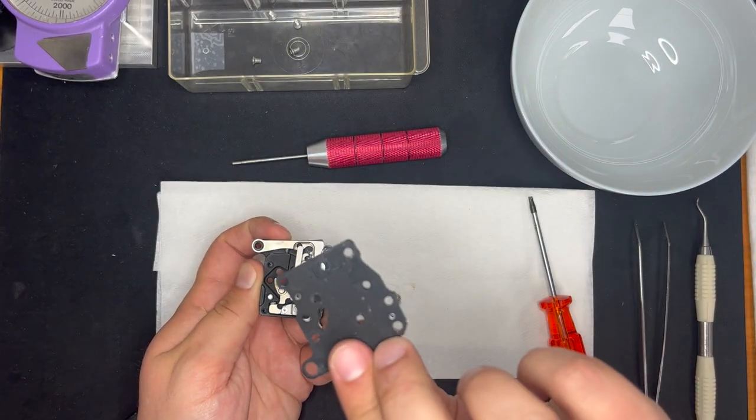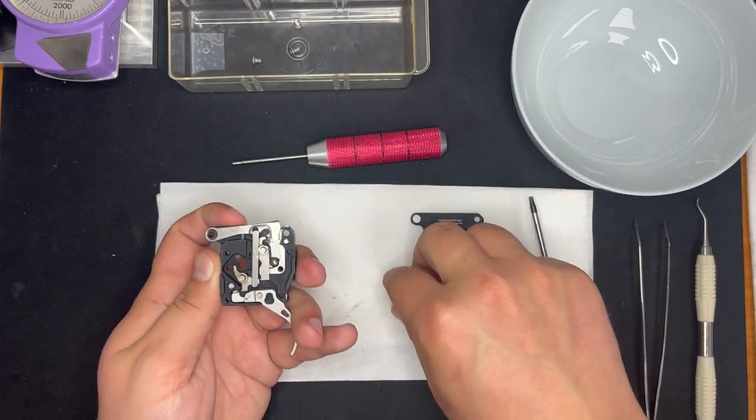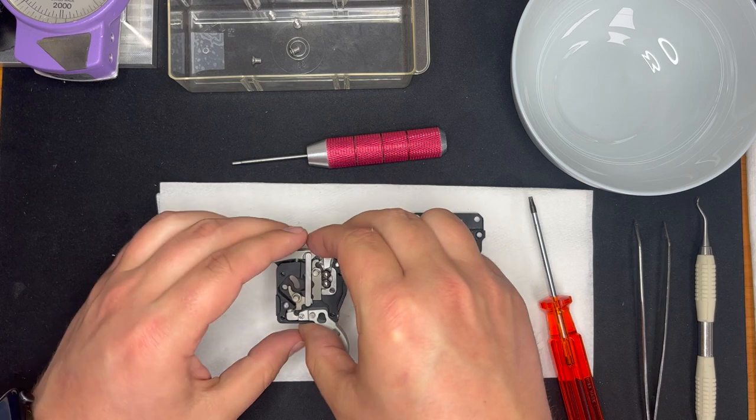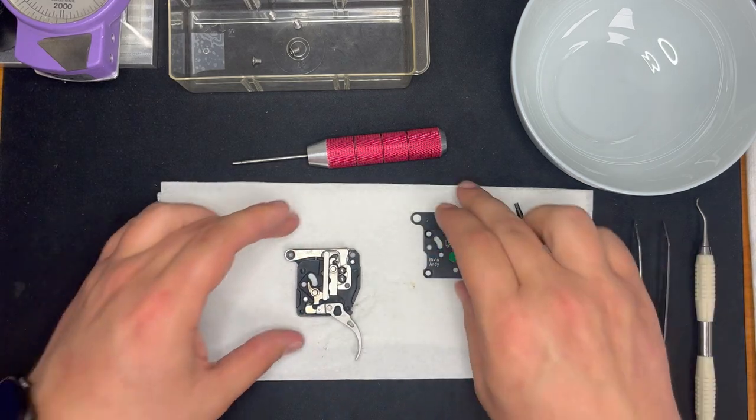That one came off. All right. See, we lost the ball there. Put that back in. There's your tension bar here. All right. We have our trigger open.